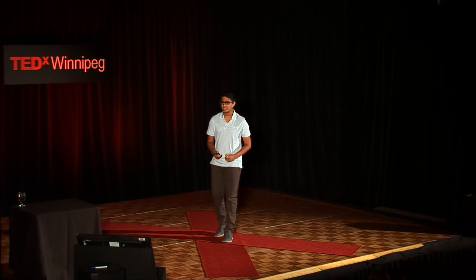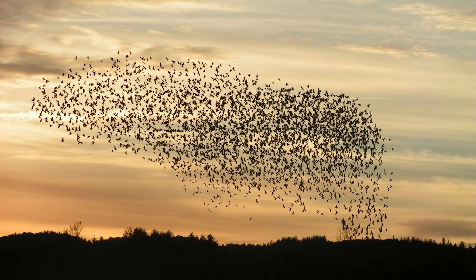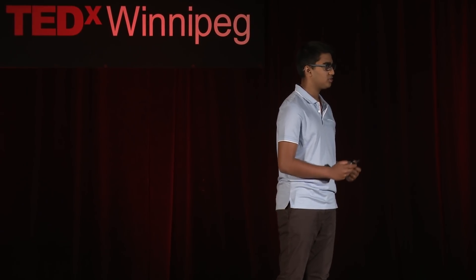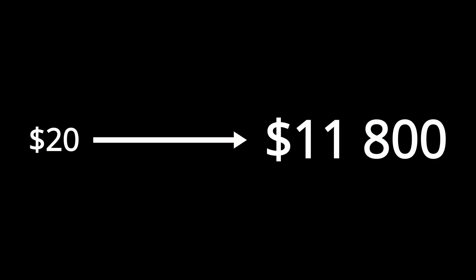Yet another area where nature-inspired computing has worked is sports. Unanimous AI is a company that's developed a technology called Swarm AI — a set of interfaces and algorithms designed to simulate swarms in nature. They believe that if they can combine humans in the same way that a swarm of bees, fish, birds, ants, or any other swarm in nature can, they'll be able to accomplish remarkable things. Not only did they predict that the New England Patriots would defeat the Atlanta Falcons in Super Bowl 51, but they also predicted the exact score of 34 to 28. Plus, they predicted the top four horses in the Kentucky Derby — and in order — turning a $20 bet into an $11,800 payout.